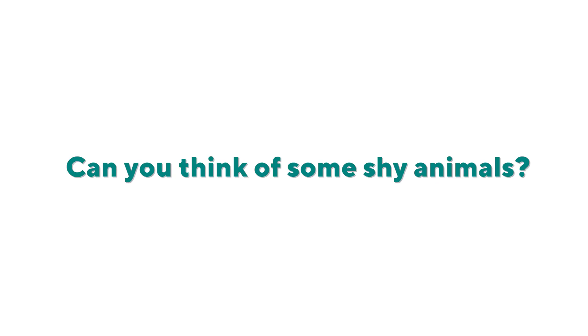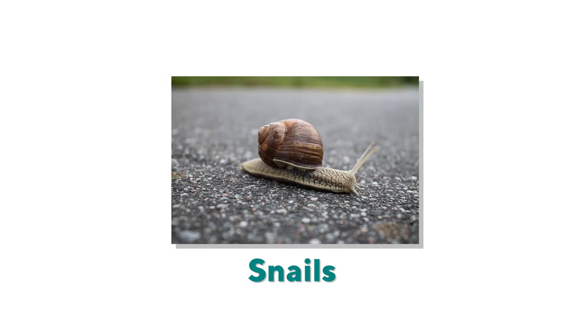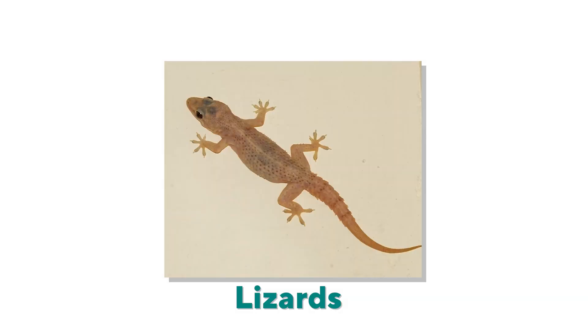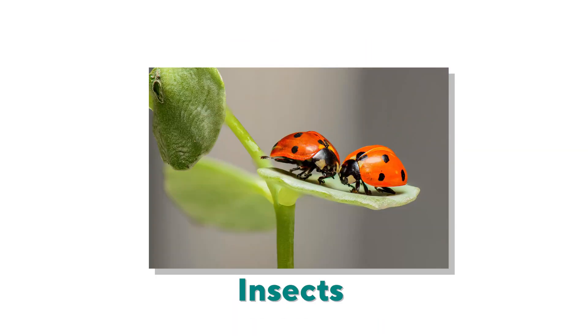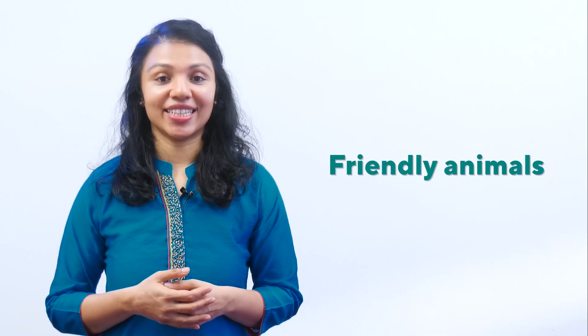Shy animals hide in their shells, or they run away from us or any larger animal they come across. Examples include tortoises and snails — they hide in their shells — as well as earthworms, lizards, rabbits, squirrels, birds, and most insects. All of these fall into this shy animal category.